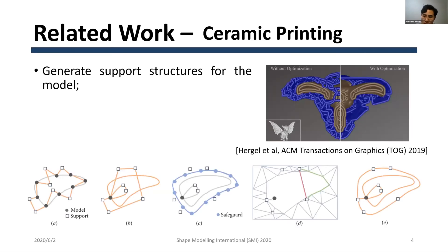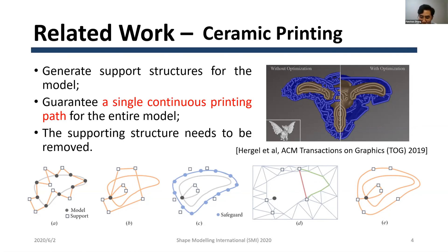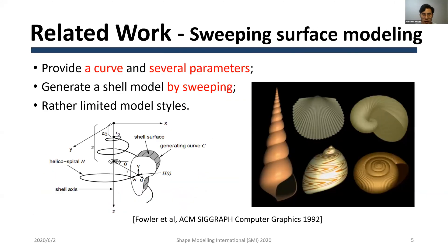Fugl et al. propose a method for integrating tour paths, planning, and support structure generation. The work guarantees a single continuous printing path for the entire model, but the support structure needs to be manually removed later. Fugl et al. also propose a method of forming shells by sweeping with a curve. The input is simple, but the generated models are very limited.